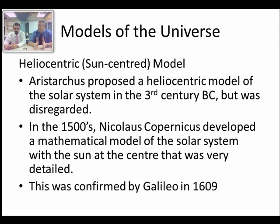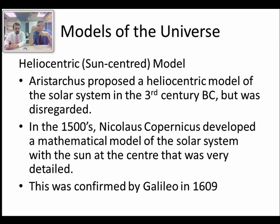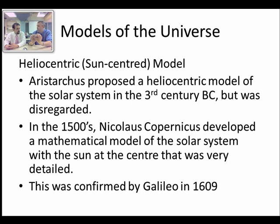In 1609, Galileo looked at Jupiter with his telescope and noticed it had four moons — still known as the Galilean moons. He saw they were actually orbiting Jupiter, which gave him proof that something was orbiting something other than Earth, blowing up the whole 'Earth is the center of everything' idea. Galileo's telescope was about five feet long, with an objective lens only about an inch in diameter, and he ground his own lenses.